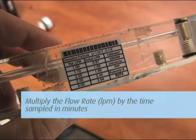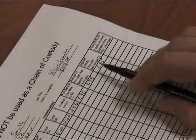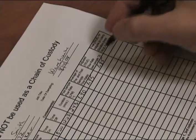Multiply the flow rate in liters per minute by the total time sampled in minutes to get the air volume in liters. Record the total liters on the field pump data sheets and the chain of custody.